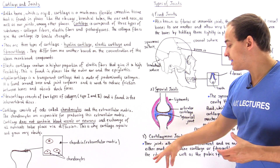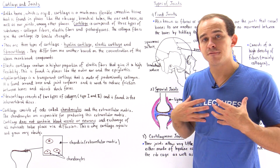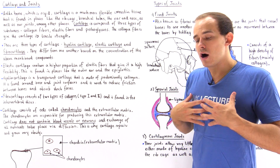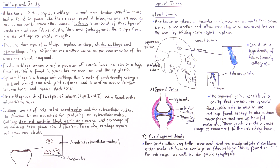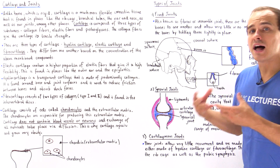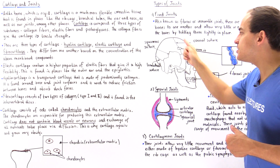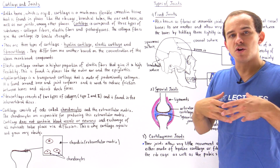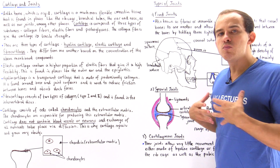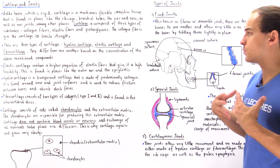The rib cage has to expand back and forth as we breathe in and out, so we need a slight ability for those bones to move. That is exactly why the cartilaginous joint allows a slight amount of movement, while the fixed joint does not. We want the bones of the rib cage to move so that as we breathe in and out, the rib cage can continually expand and compress with our breathing rhythm.